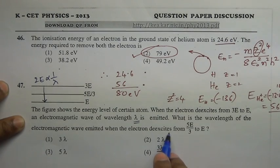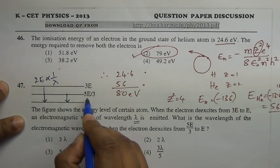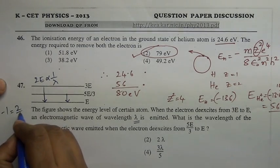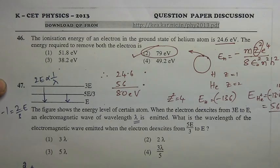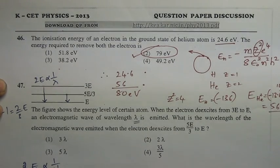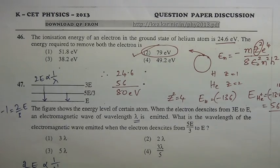What is the wavelength of the electromagnetic wave emitted when the electron de-excites from 5E/3 to E? The difference is 5E/3 minus E, which equals 2E/3. So 2E/3 is proportional to 1/lambda prime. Dividing: (2E/3) / (2E) equals (1/lambda prime) / (1/lambda). The E terms cancel, giving lambda prime equals lambda into 3.